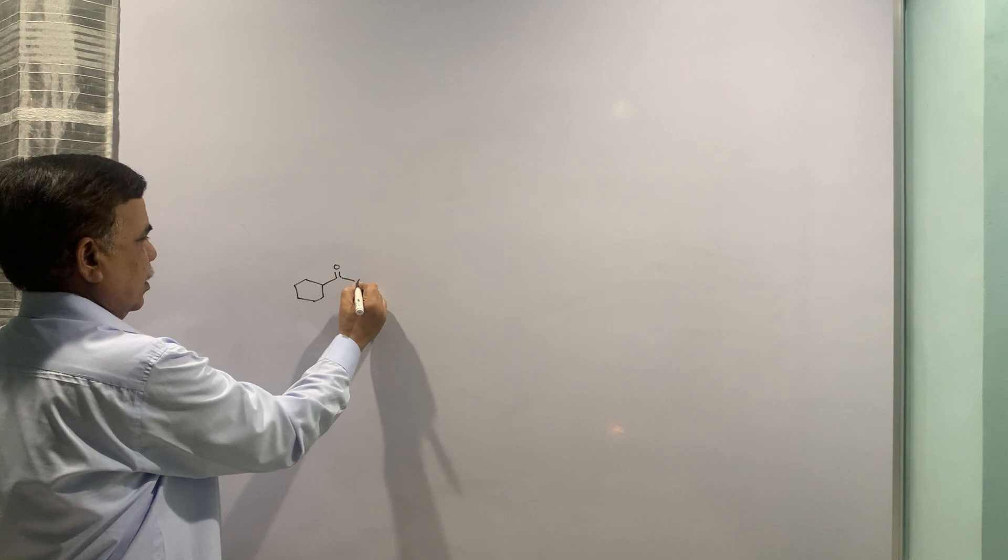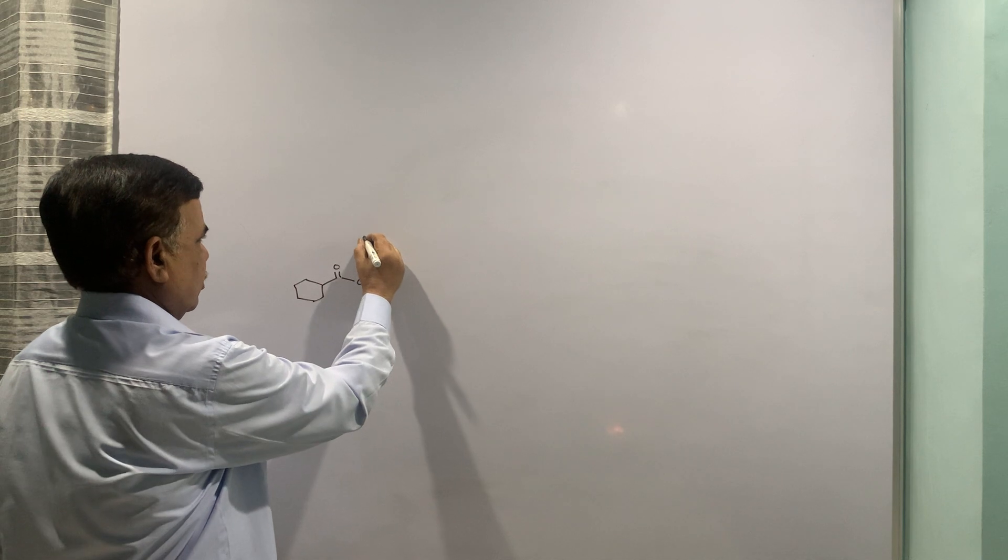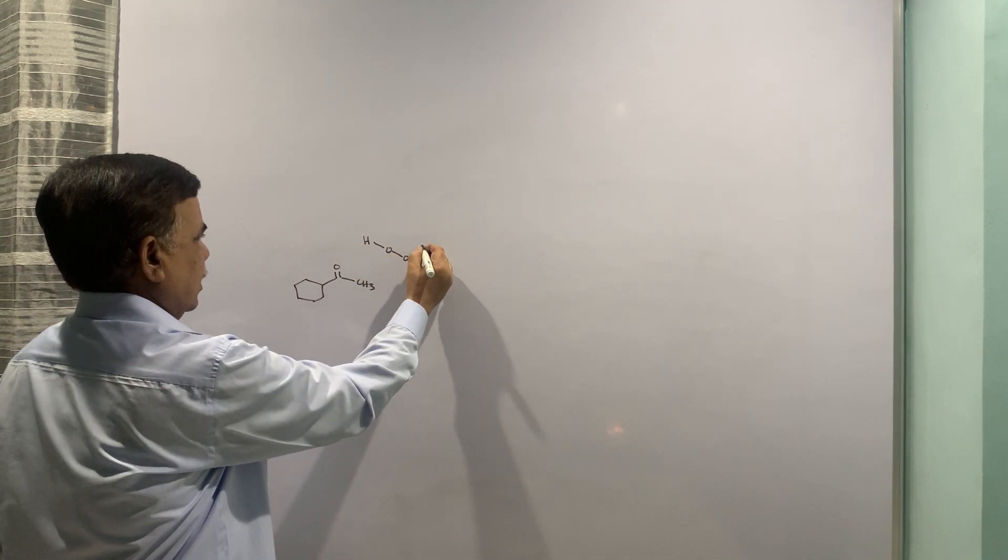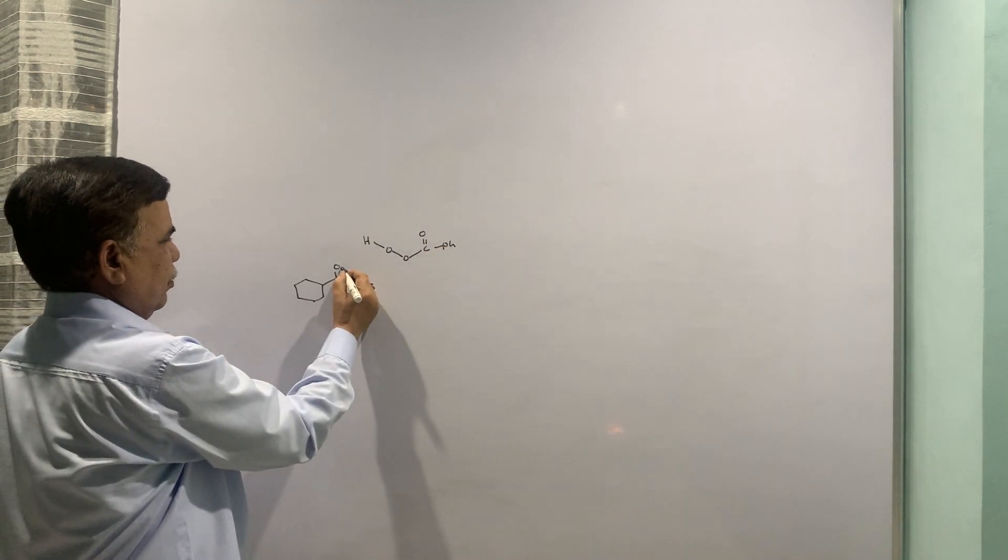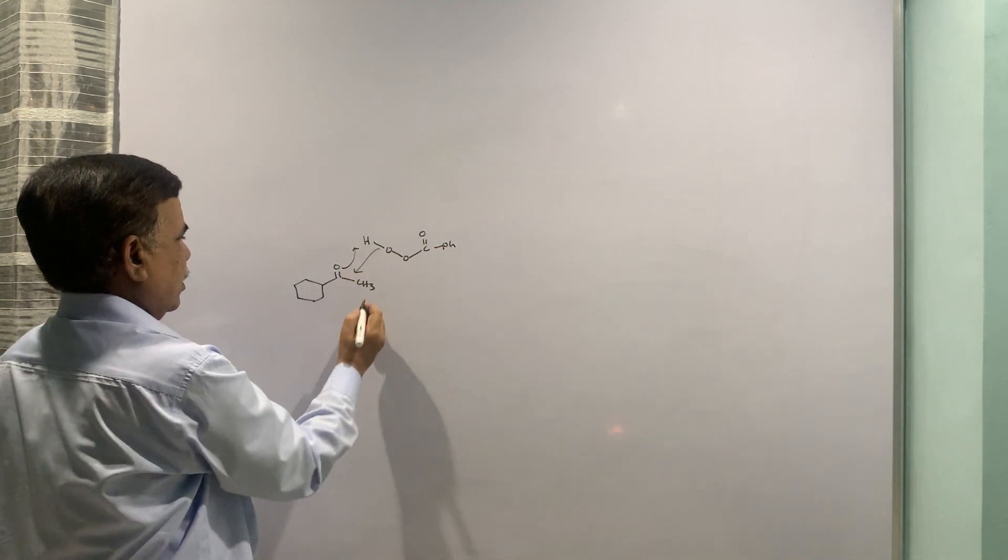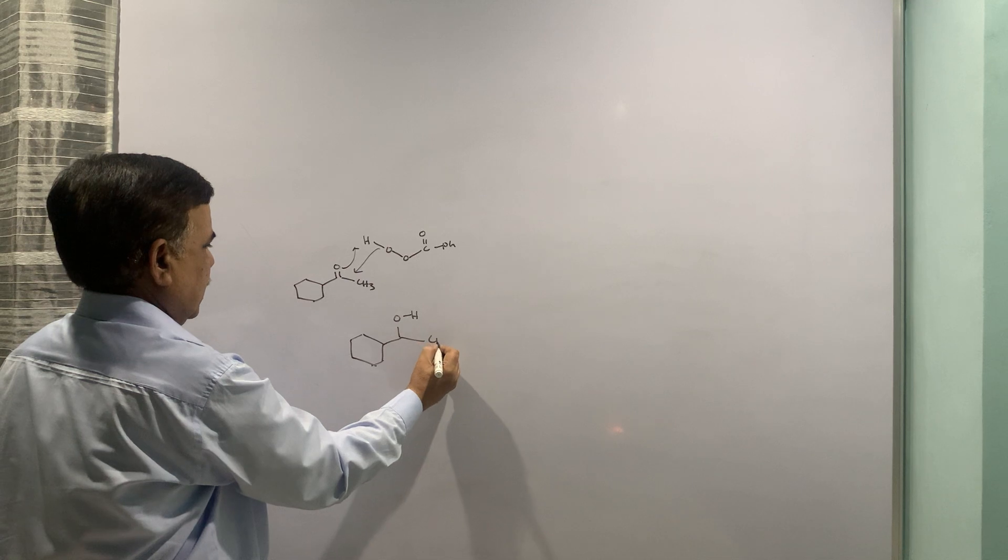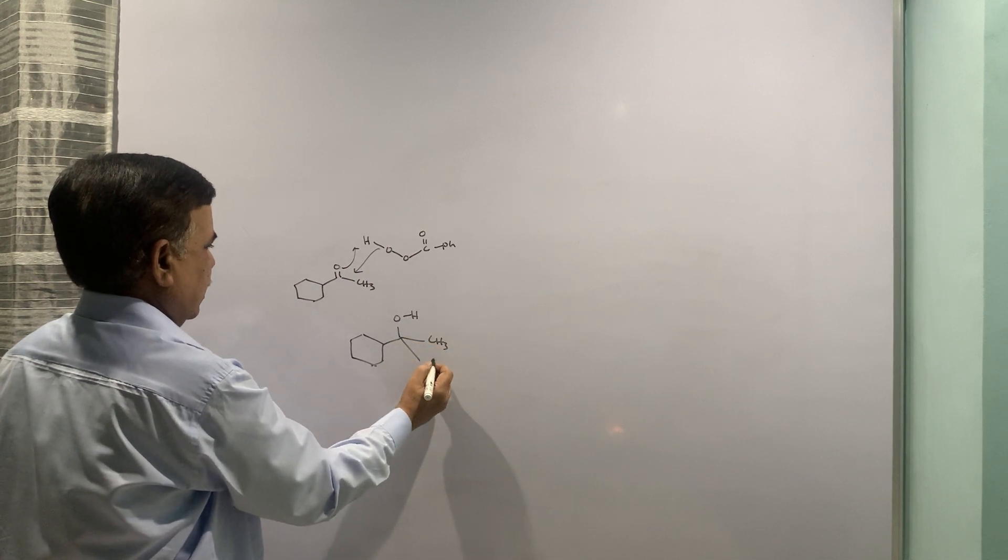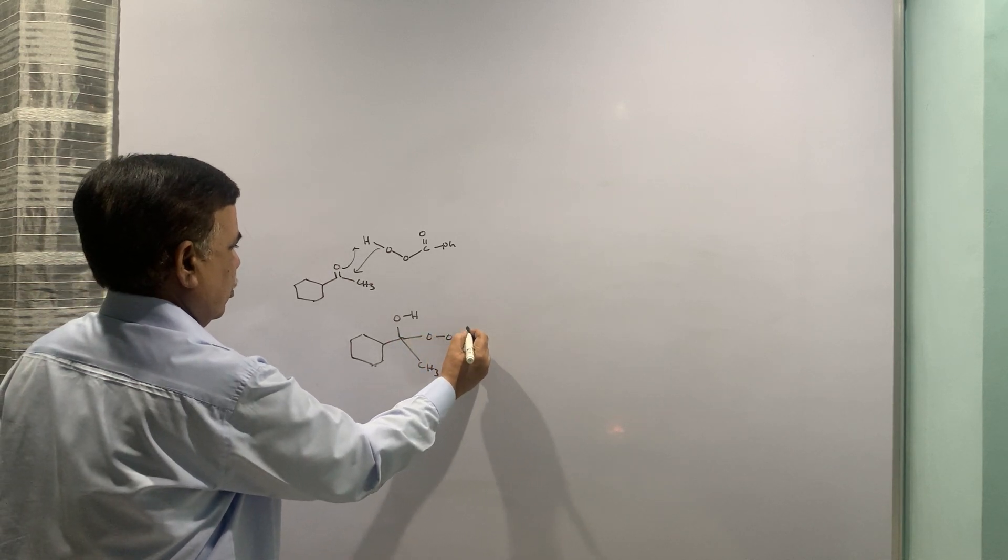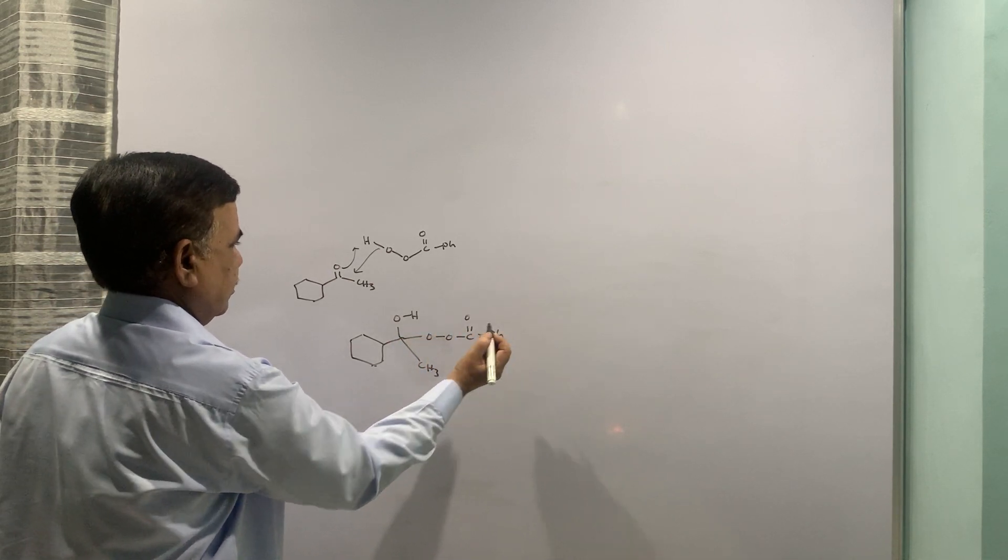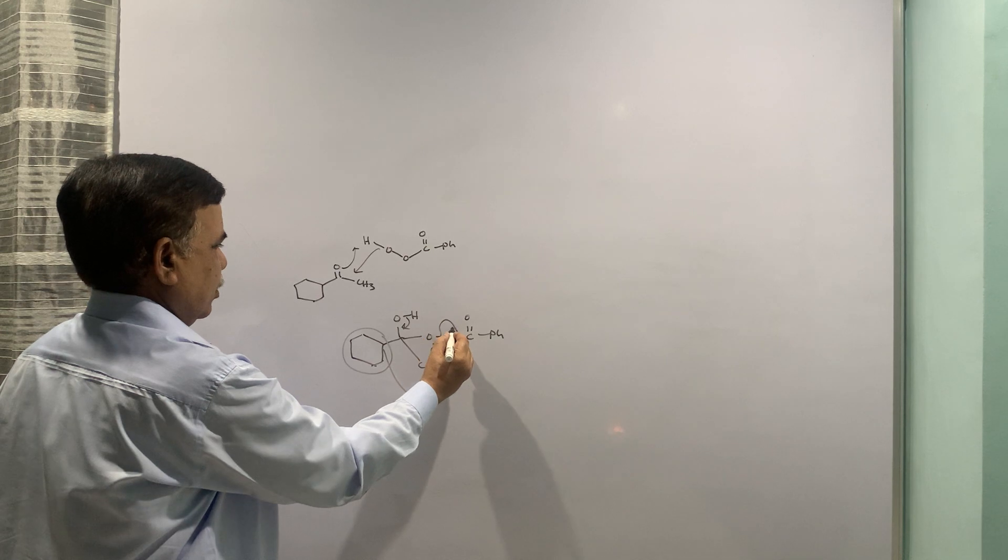One more example is there. Let us finish that also. This ketone is treated with perbenzoic acid. So I am putting perbenzoic acid directly here, COPh. This is perbenzoic acid. As we have already shown, OH, CH3 and then let me put CH3 here, COPh. It comes here, this entire group migrates, this goes off.